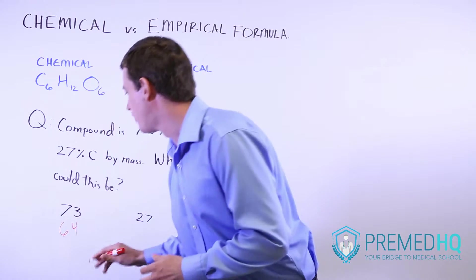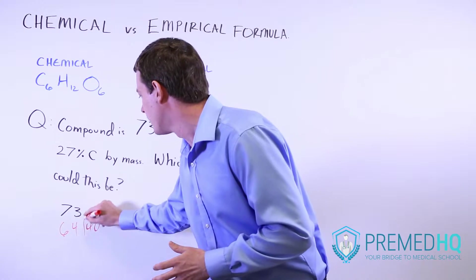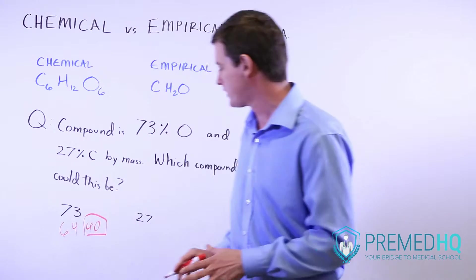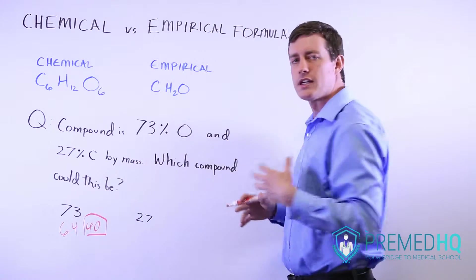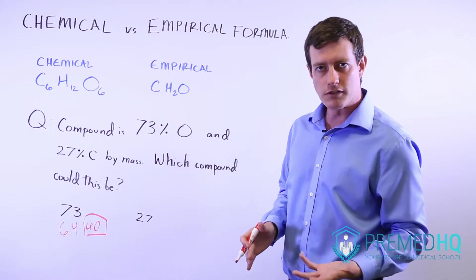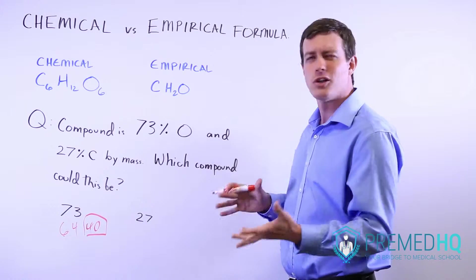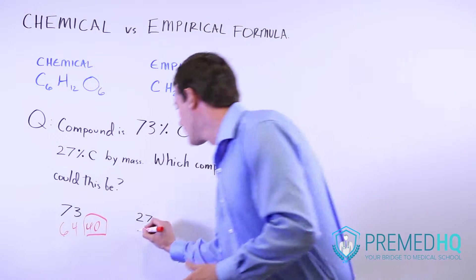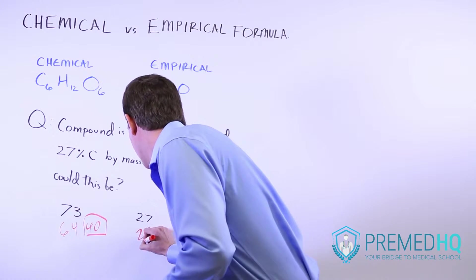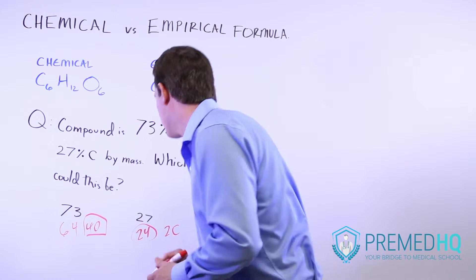64 is about 4 oxygens. Let's note that 64 is 4 oxygens. And for the 27% carbon, we divide by 12s. Our options are 12, 24, 36. The closest one is 24, and 24 equals 2 carbons.